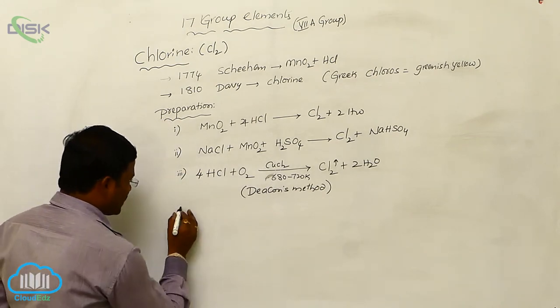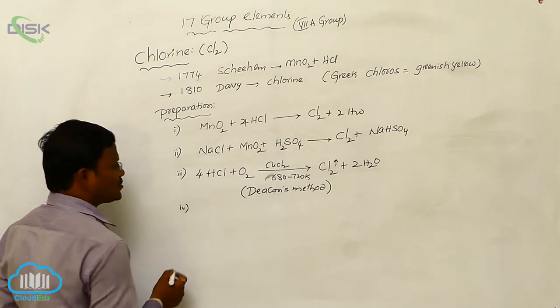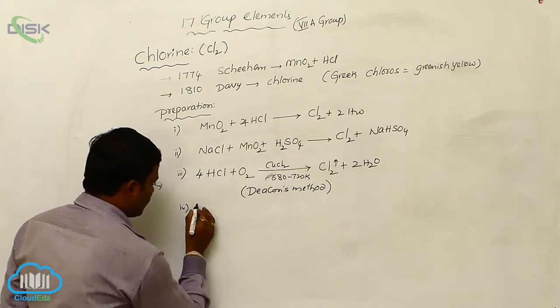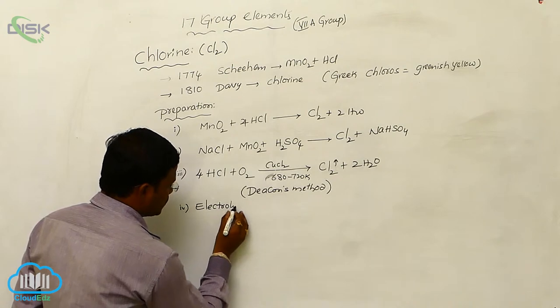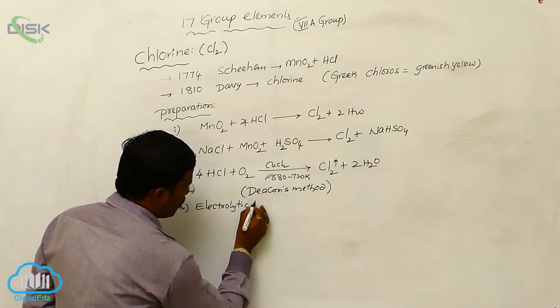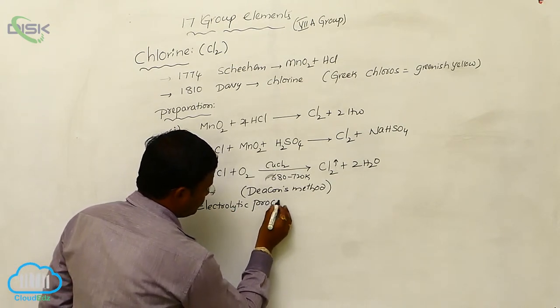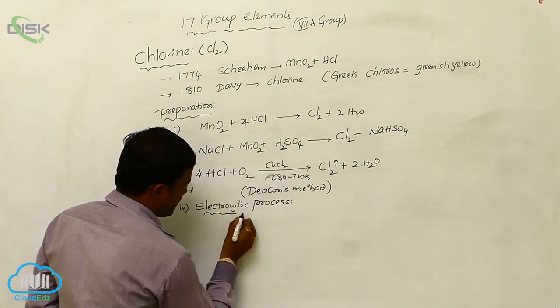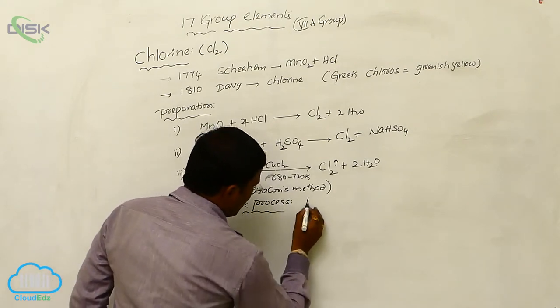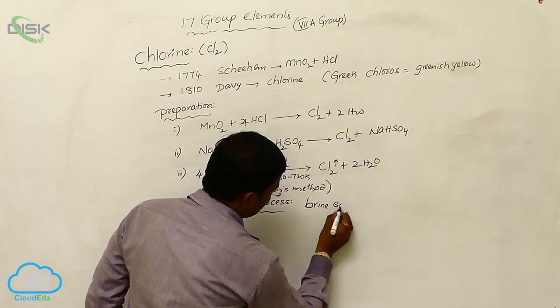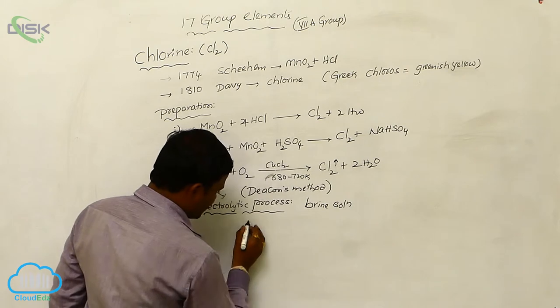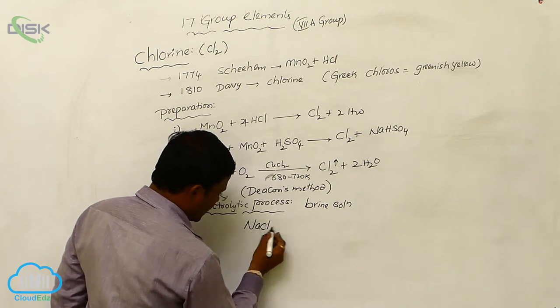And the most convenient method, one more method used by us to produce chlorine is from electrolytic process. Electrolytic process. Here, electrolytic process of brine solution. What is brine solution here? Sodium chloride solution.